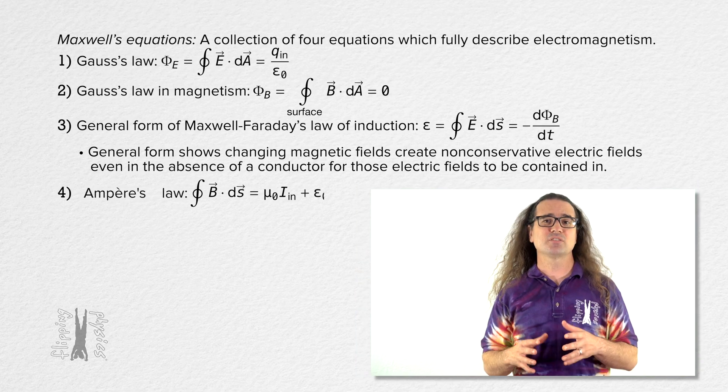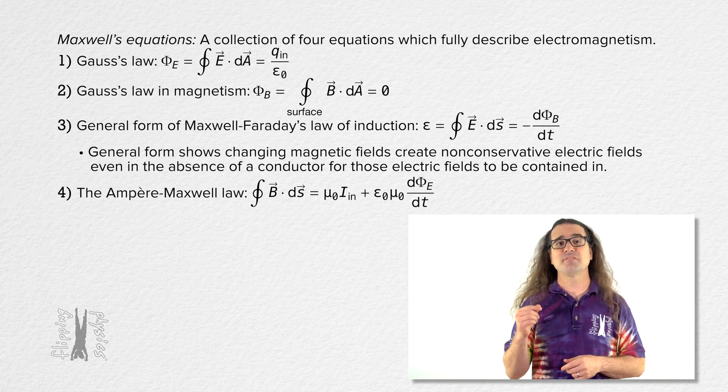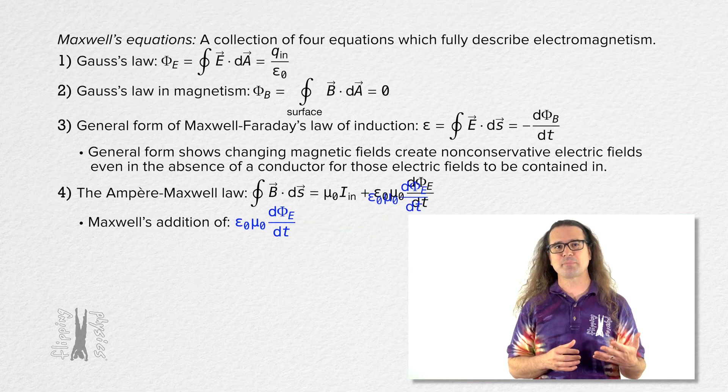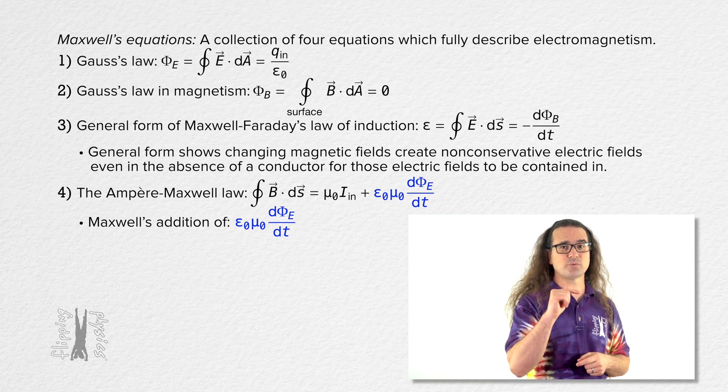Correct, Billy. Maxwell's fourth equation is called the Ampere-Maxwell law and adds the following to Ampere's law: electric permittivity of free space times magnetic permeability of free space times the derivative of electric flux with respect to time.